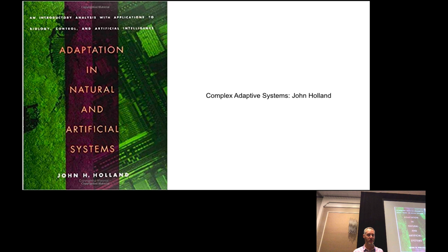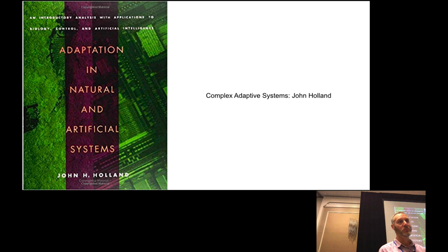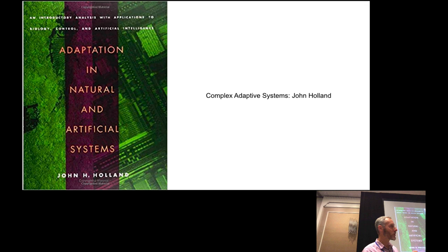Throughout this talk, I'm going to think about complex systems from the point of view of John Holland. Way back in the 1970s, Holland wrote influential works describing the interesting relationship between adaptation and complexity. Our world is complex and ever-changing, and as an agent — whether biological or a machine — you have to be complex in some way to continuously deal with the complexity the world throws at you.